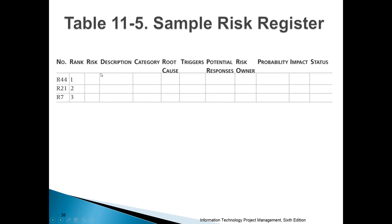All in all, a risk register can look like a table where you have IDs for each risk, then rank, risk name, description, category, root cause, triggers, potential responses, risk owners, probability, impact, and status of each risk listed.